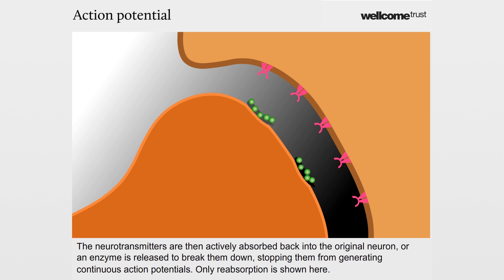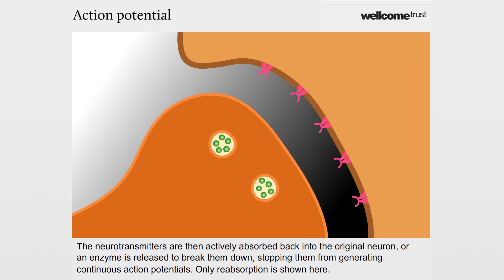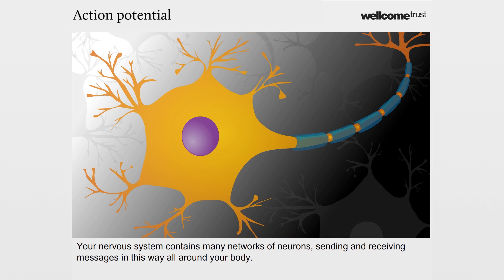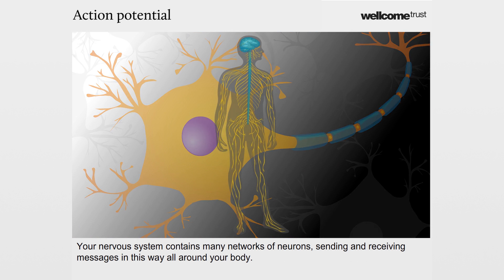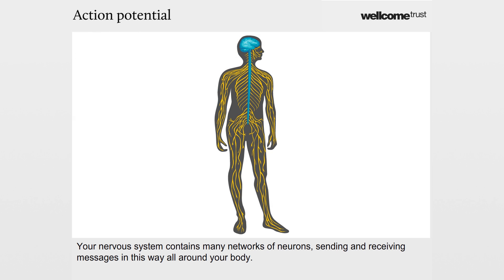The neurotransmitters are then actively absorbed back into the original neuron, or an enzyme is released to break them down, stopping them from generating continuous action potentials. Only reabsorption is shown here. Your nervous system contains many networks of neurons sending and receiving messages in this way all around your body.